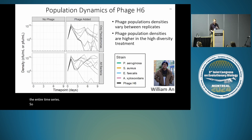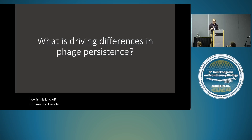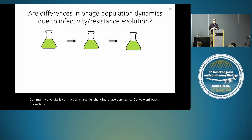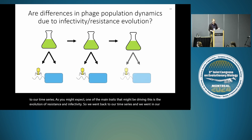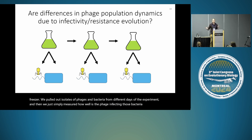We next wanted to understand what's driving these differences — how this community diversity is changing phage persistence. As you might expect, one of the main traits driving this is the evolution of resistance and infectivity. So we went back to our time series, pulled out isolates of phages and bacteria from different days of the experiment, and simply measured how well the phage is infecting those bacteria. Did the bacteria evolve resistance? Did the phage lose infectivity?